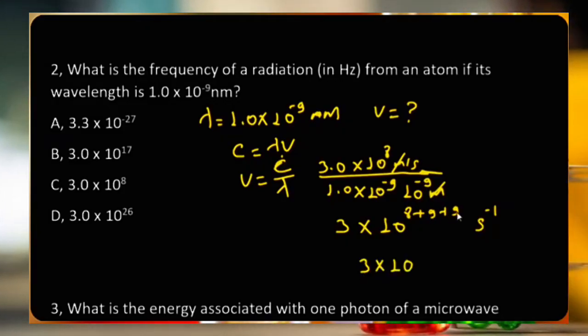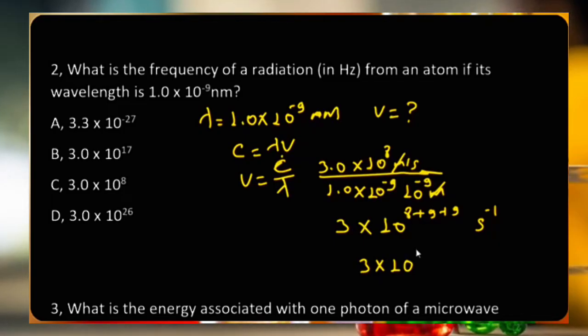Calculating the exponent: 9 plus 9 gives 18, and 18 plus 8 gives 26. So the frequency result involves 10 to the power of 26 per second.